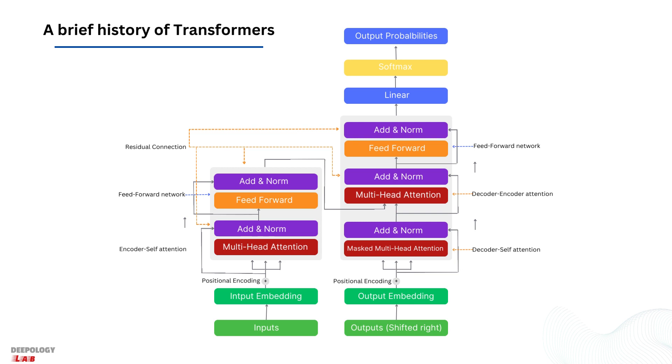Third, transformers use positional embeddings to store information regarding the position of words in a sentence.